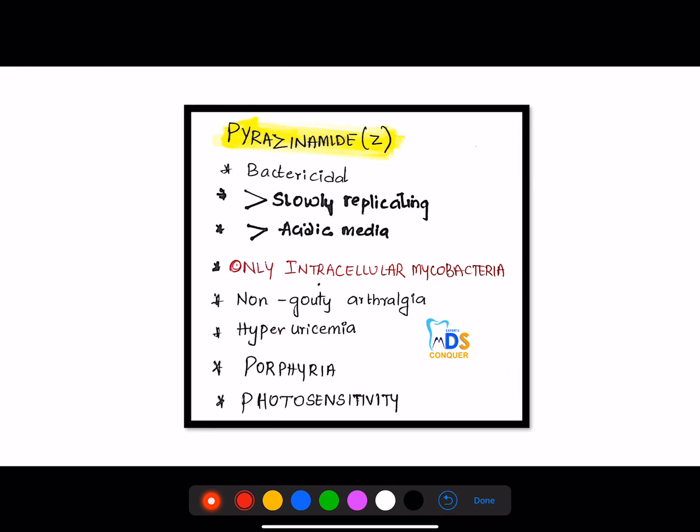And then coming to another important drug, that is pyrazinamide. This is also bacteriocidal, and it will more affect slowly replicating mycobacteria and more effective in acidic media. And only intracellular mycobacteria it is effective. And it can cause non-gouty arthralgia, hyperuricemia, porphyria, and photosensitivity. These are the adverse effects.